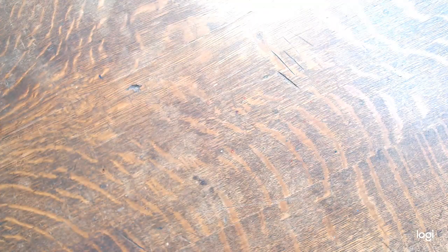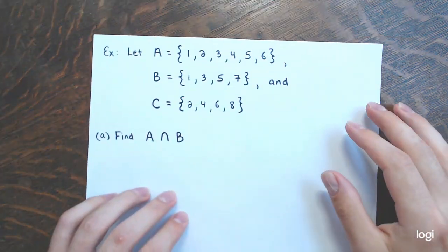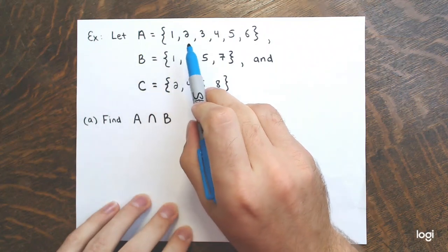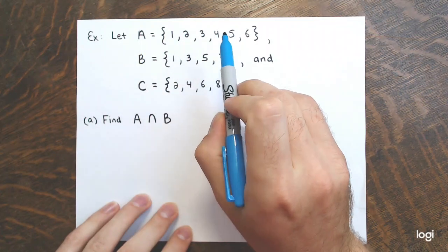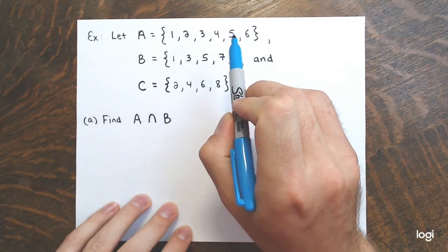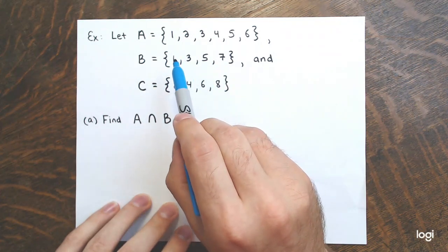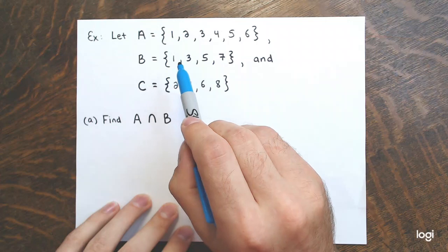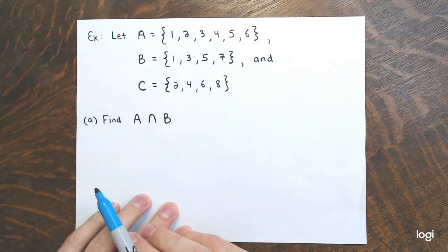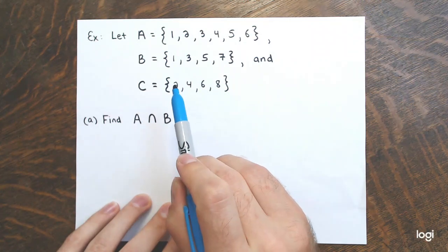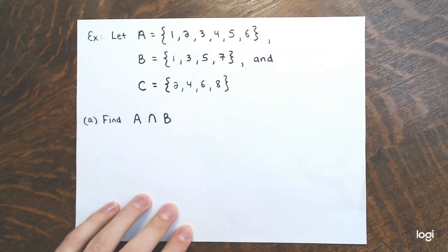My first examples involve some simple finite sets. I have a set called A which is the collection of 1, 2, 3, 4, 5, and 6 — just those six whole numbers. Set B is the collection of 1, 3, 5, and 7 — four odd whole numbers. And set C is the collection of 2, 4, 6, and 8 — four even whole numbers.